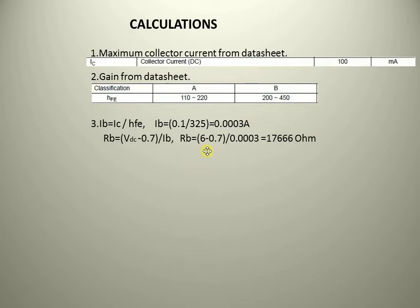In the previous circuit diagram, the DC voltage is 6V. So RB = (6 − 0.7) / 0.0003A, which equals 17,666 ohms, which can be rounded up to 17K ohms. So I am taking 17K ohm resistance as the base resistance. If I connect 17K ohm resistance to the base of the transistor, then 100mA will flow through the collector.